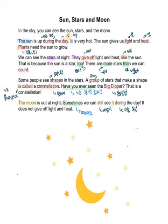Some people see shapes in the stars. A group of stars that make a shape is called a constellation. Have you ever seen the Big Dipper? That is a constellation.